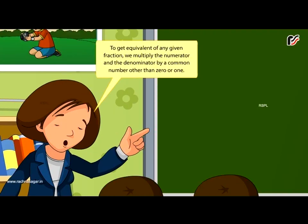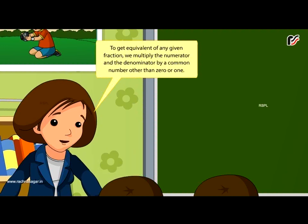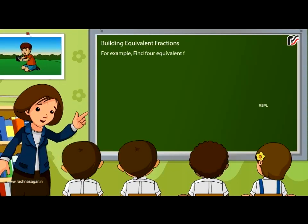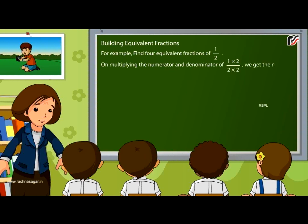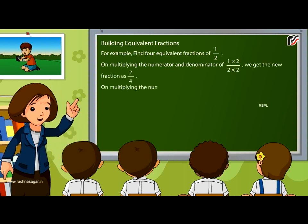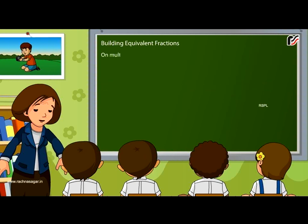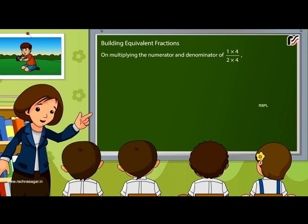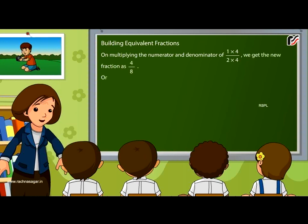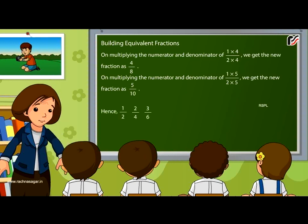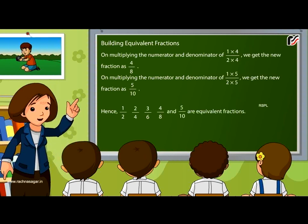Building equivalent fractions: to get the equivalent of any given fraction, multiply the numerator and the denominator by a common number other than 0 or 1. For example, find 4 equivalent fractions of 1 by 2. Multiplying by 2 gives 2 by 4; multiplying by 3 gives 3 by 6; multiplying by 4 gives 4 by 8; multiplying by 5 gives 5 by 10. Hence, 1 by 2, 2 by 4, 3 by 6, 4 by 8, and 5 by 10 are equivalent fractions.